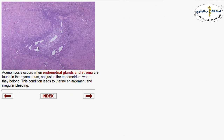Another condition affecting the uterus is adenomyosis — endometrial glands and stroma found within the myometrium. This condition leads to uterine enlargement and irregular bleeding. Within the myometrial fibers, there is a focus of endometrial glands and endometrial stroma.